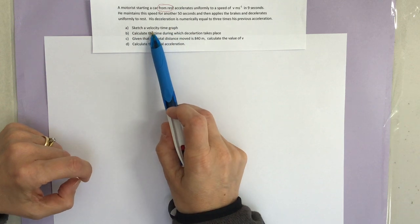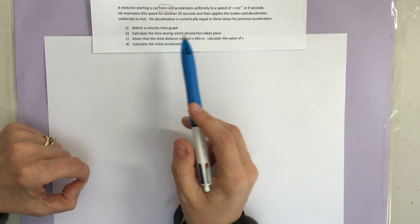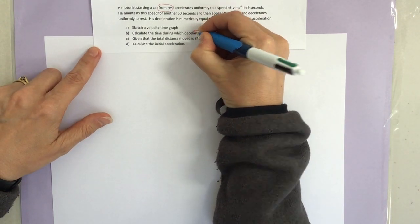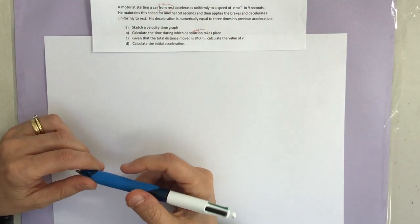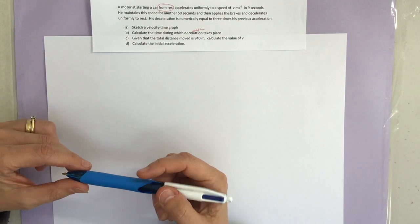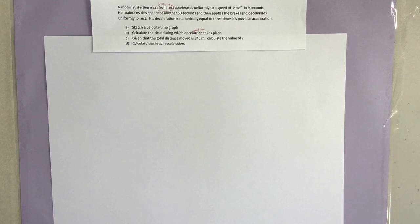We're asked to sketch the velocity-time graph, calculate the time during which the deceleration takes place, and given that the total distance moved is 840 — that's going to be the area under our graph — calculate the value of V, and finally calculate the initial acceleration. So we've got a few unknowns, but let's get a graph drawn.